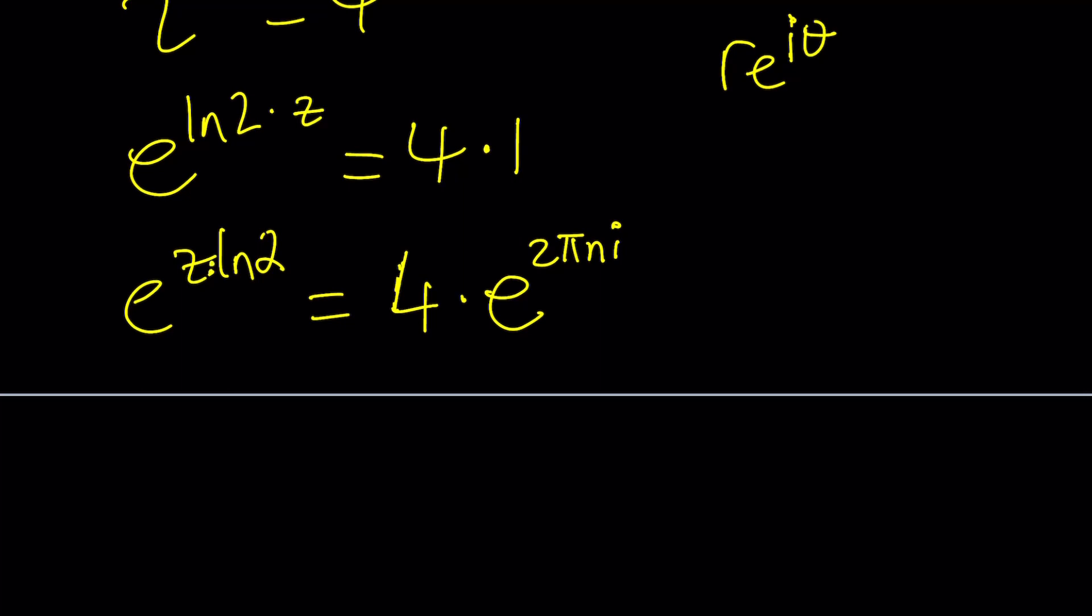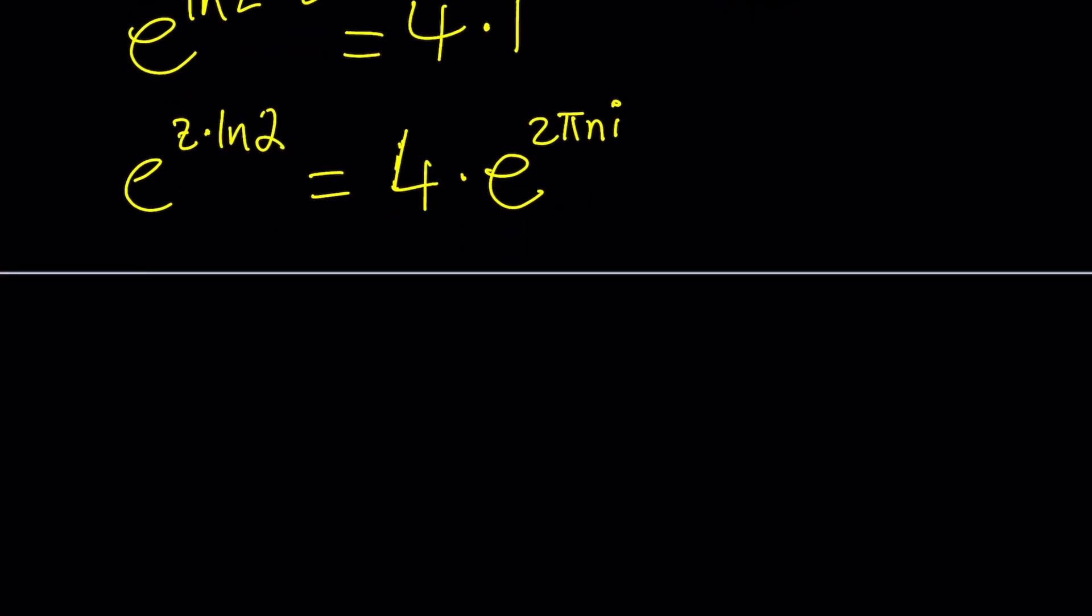Okay. Let me just write this a little better. z times ln 2. Now, I'm going to ln both sides. That's going to bring down this. So that's going to be ln e to the z ln 2 equals ln 4 times e to the power 2 pi n i.